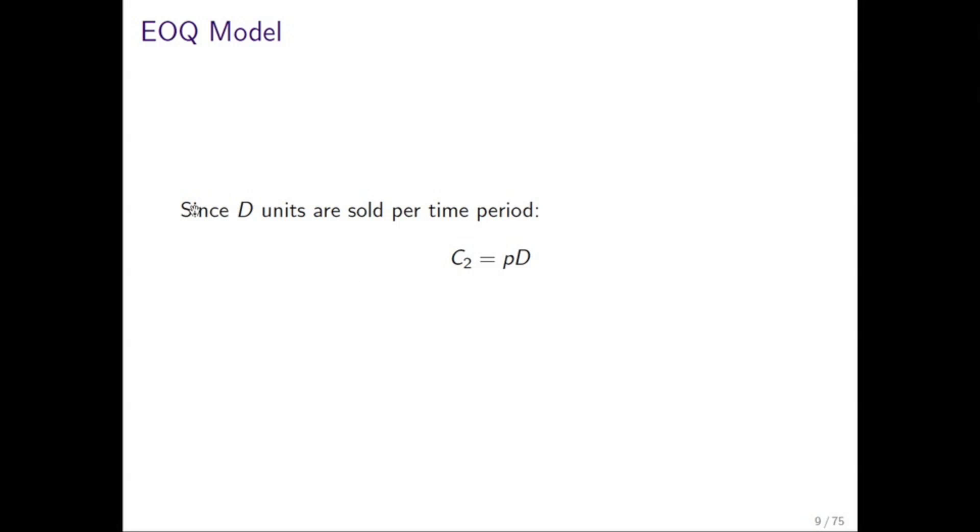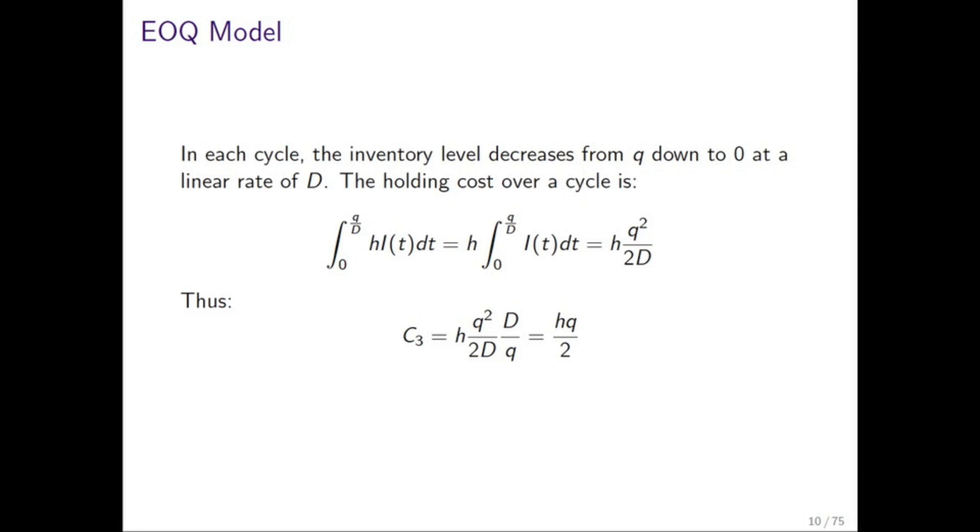We know that there are going to be D units per time period that are sold, so we can easily say that we have P times D as our purchasing cost. And then finally, we have the holding cost. Now what we do in the holding cost is we integrate over the length of the cycle, so from zero to Q over D.